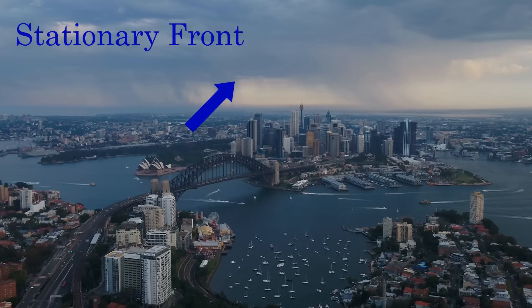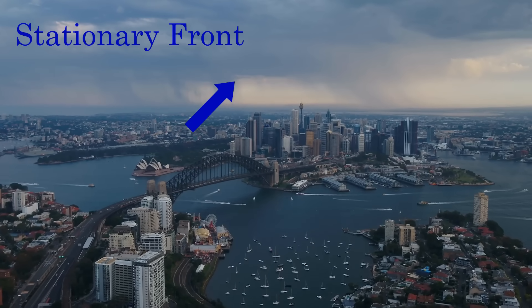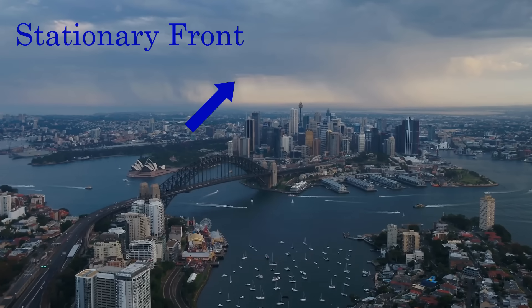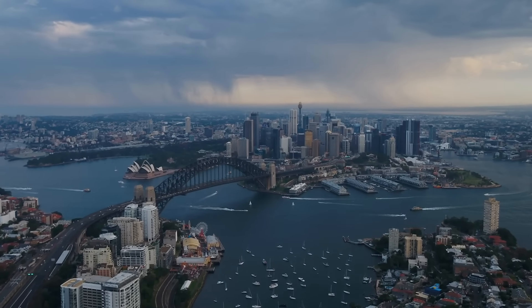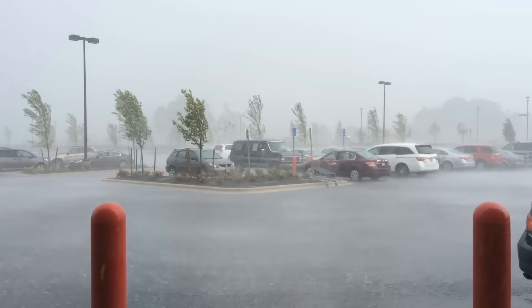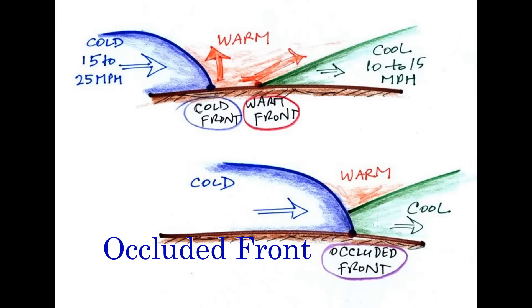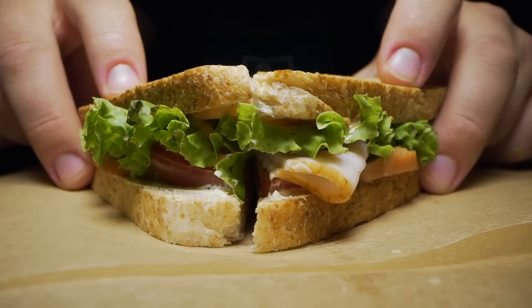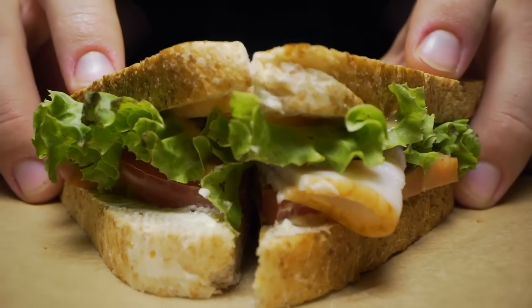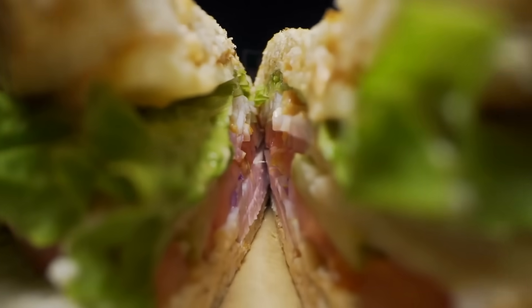Next, we have the stationary front. These form when a cold front and a warm front get into a standoff and neither wants to move. Stationary fronts may produce long periods of precipitation. Finally, we have the occluded front. When a cold air mass pushes into a warm air mass that is behind a cool air mass, the warm air mass is pushed up above the cooler air masses. The resulting occluded front may produce long periods of precipitation. You can think of occluded fronts as a sandwich — the warm front is the meat and cheese, and the cold fronts are the bread.